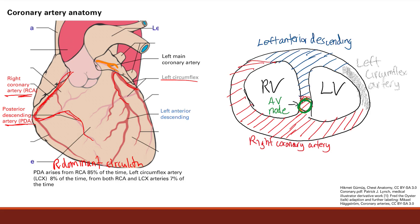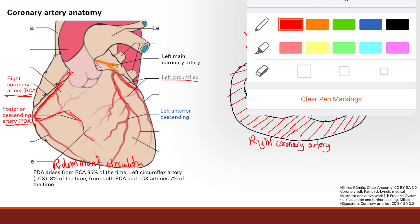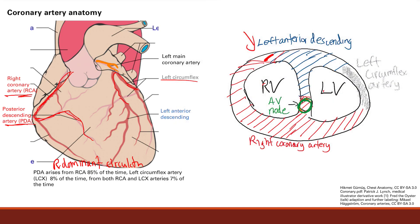Now I'm going to talk about what parts of the heart are supplied by which of these arteries. This picture tells us a lot — this is a cross-section of the heart showing the right ventricle and left ventricle. This blue here is going to point out where the left anterior descending artery supplies — the anterior surface of the left ventricle.